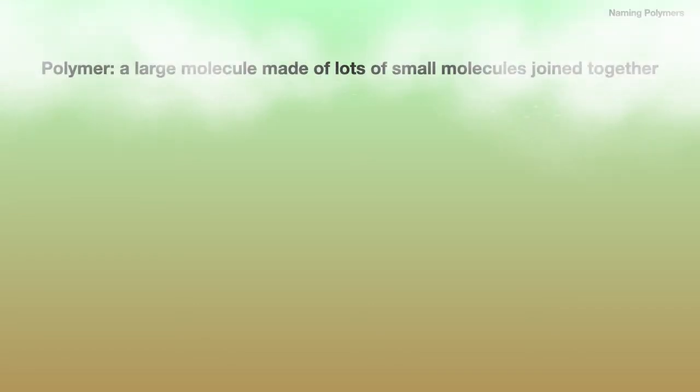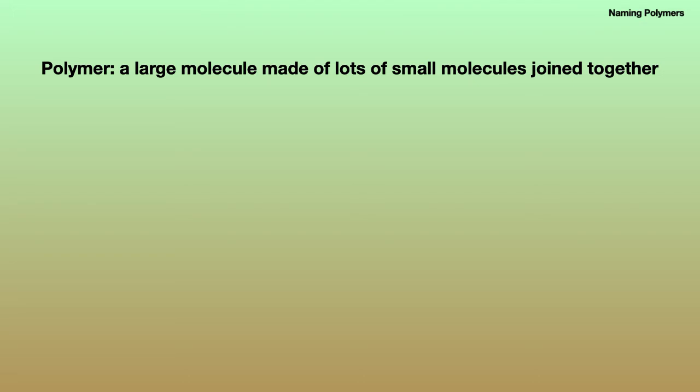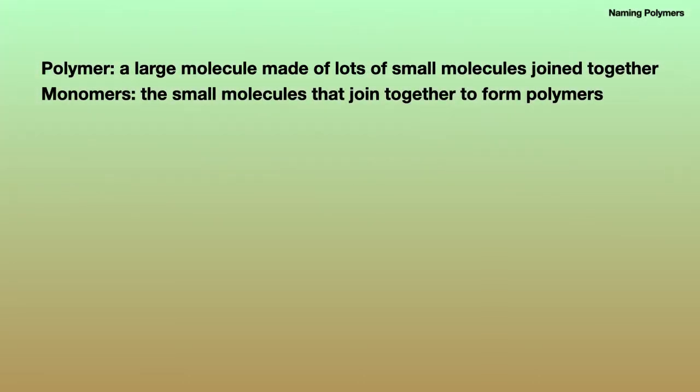Which gives us some idea how to name polymers then. Okay. So I've used the word polymer. Let's be clear about what it means. A polymer is a large molecule made of lots of small molecules joined together. And those small molecules in turn are called monomers. When you see mono it means one. So these are monomers. The monomers are the small molecules that join together to make polymers.